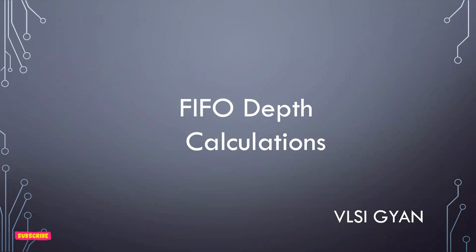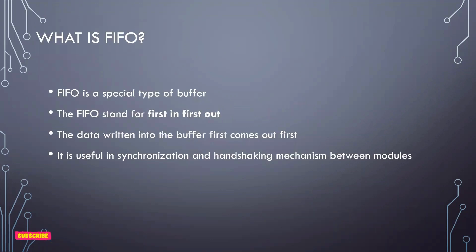Without wasting time, let's get started. FIFO stands for First In First Out — it's a memory organization where the data which enters leaves first. It is similar to RAM, but the difference is that here the data written first is read first, whereas in RAM you can randomly write and read at any particular location. FIFOs are like temporary memory used for synchronization and handshaking mechanisms.